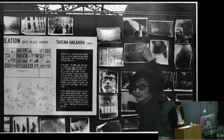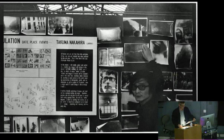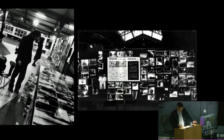We know quite a lot about the installation of Nakahira's Circulation at the Paris Biennale in October 1971. He wrote a good deal about the project over the next couple of years; it was a very important project for him and a significant moment for what he described as his artistic methodology. Nakahira was one of four Japanese artists commissioned to make an intervention at the Biennale that year, invited by his friend and Provoke collaborator Takehiko Okada.